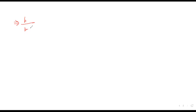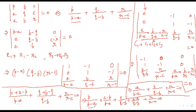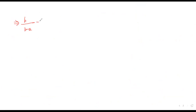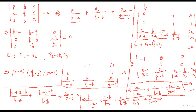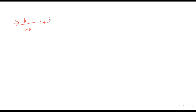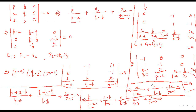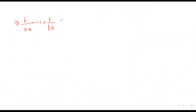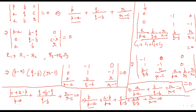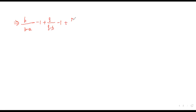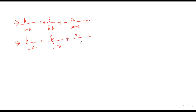This implies p/(p-a) is the first term, (a-p)/(p-a) is -1, plus q/(q-b), (b-q)/(q-b) is again -1, plus r/(r-c) equals zero. So p/(p-a) + q/(q-b) + r/(r-c) equals 1+1 = 2, since the two minus ones are transferred to the right-hand side. So the answer is 2. Very easy.